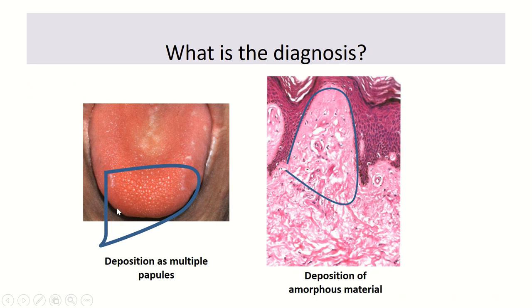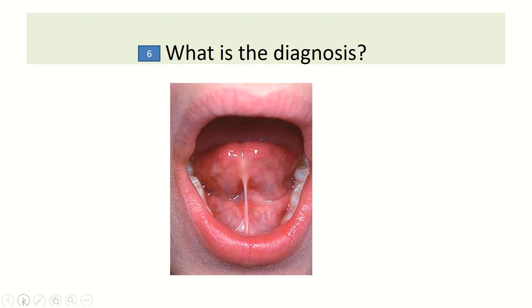What history is compatible with this finding? There are multiple papules in the anterior of the tongue — a deposition-like appearance. Don't mistake it for cobblestone appearance. The histopathology confirms deposition of amorphous material in the dermis, from the papillary dermis expanding to the reticular dermis. These findings are indicative of a deposition disease, suggesting lipoid proteinosis.